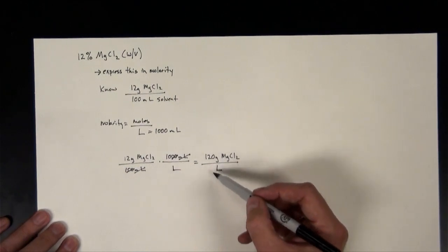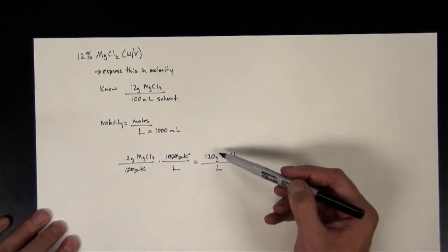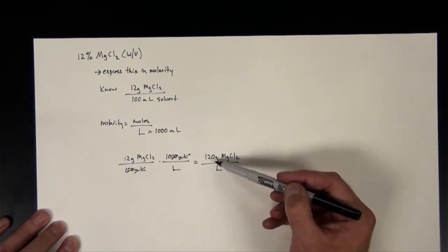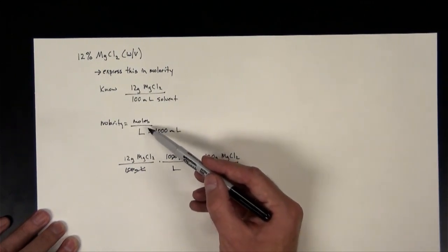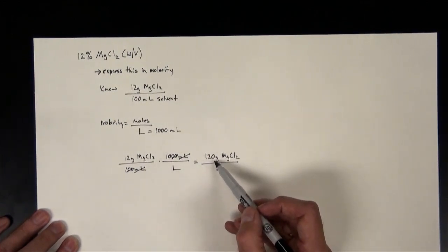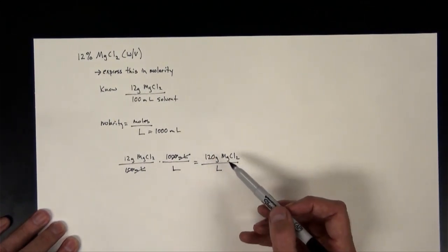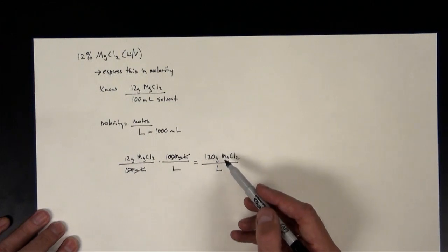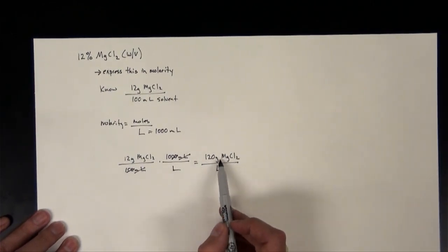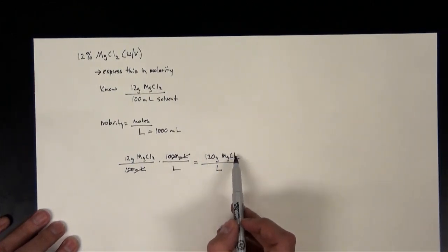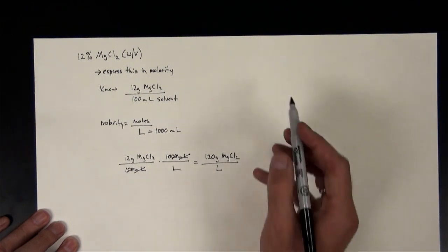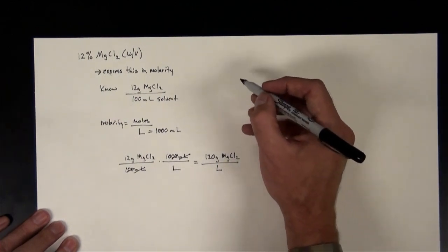This is useful information because now I can quickly figure out how many moles of this I have and enter it into the molarity equation. So our next question is: 120 grams is how many moles? To figure that out, we need to find the formula weight of magnesium chloride, so let's make our chart again.